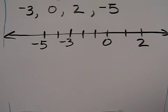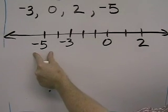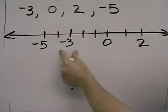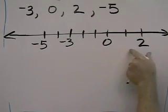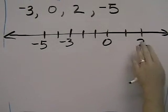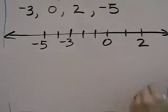So now we know the order. Negative 5 is the smallest number, negative 3 is the next smallest number, 0, and then 2 is the greatest number. So 2 is the largest, negative 5 is the smallest.